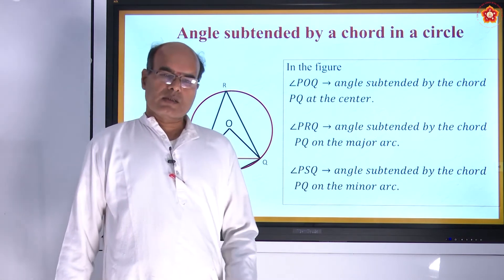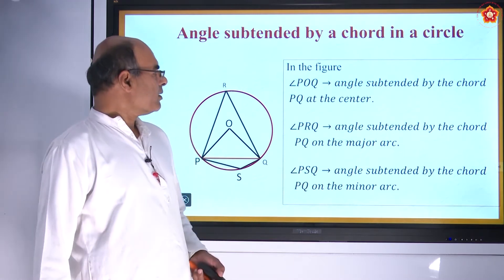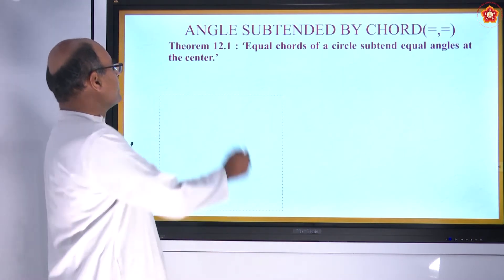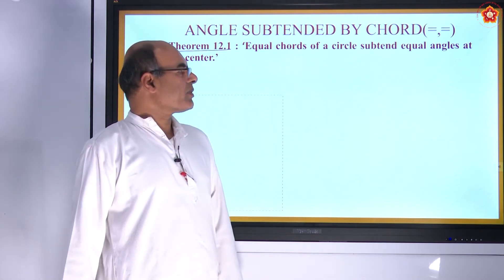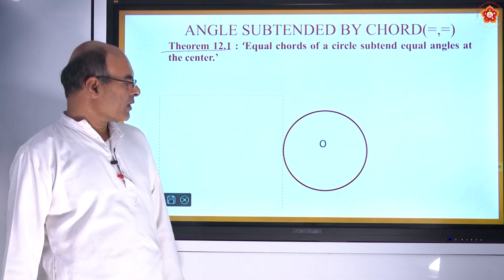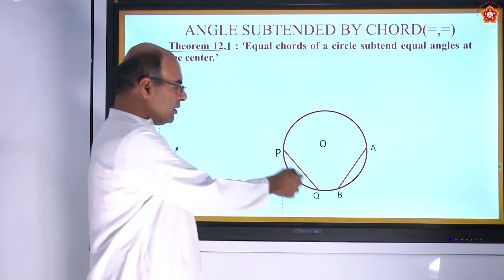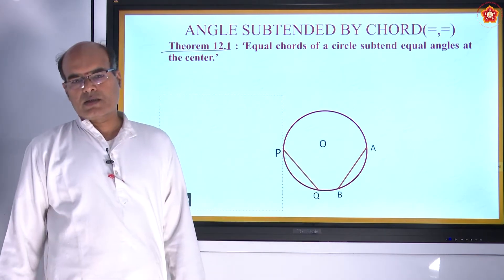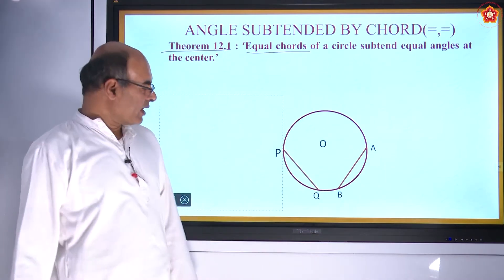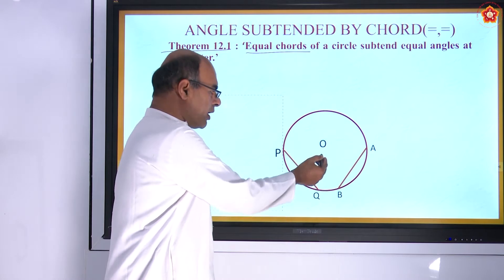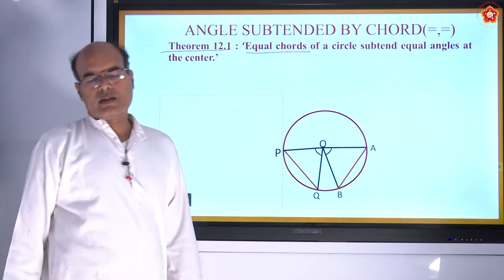This chapter has many theorems. Theorem 1: Equal chords of a circle subtend equal angles at the center. Here O is the center and PQ and AB are two different chords. If they are equal, then the angles subtended by them at the center — angle POQ and angle AOB — are equal. We have to prove this.